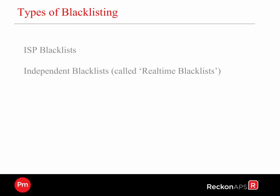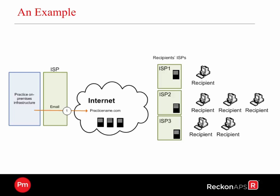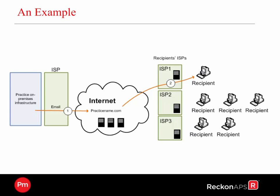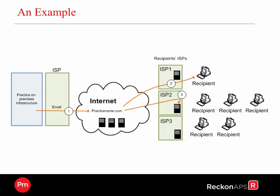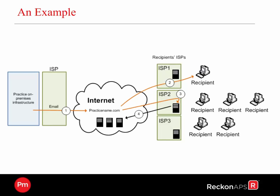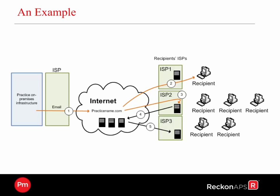Essentially there are two types of blacklists: one from the ISP directly, and the second from independent blacklists called real-time blacklists. Let's take a look at an example of an independent blacklist. The first message goes through to the first recipient OK. Then the second message goes through and the second ISP rejects it. They put that onto the blacklist as an independent blacklist. So the IP address you've sent from is now on an independent blacklist, meaning any further information coming out from that ISP is no longer forwarded on — no information is sent out.